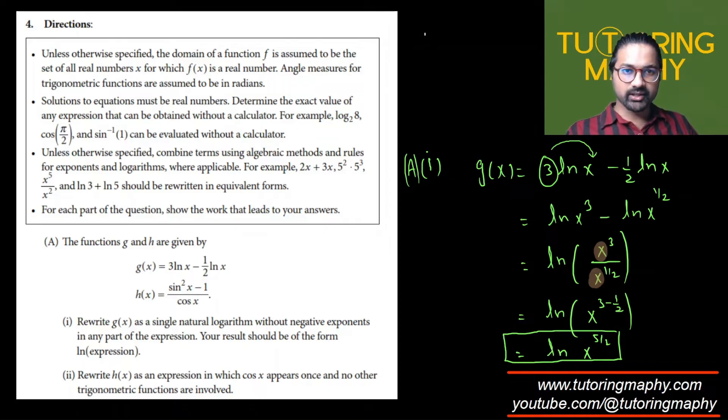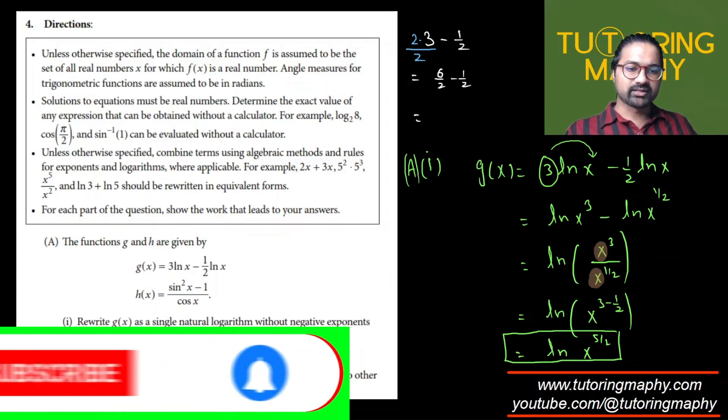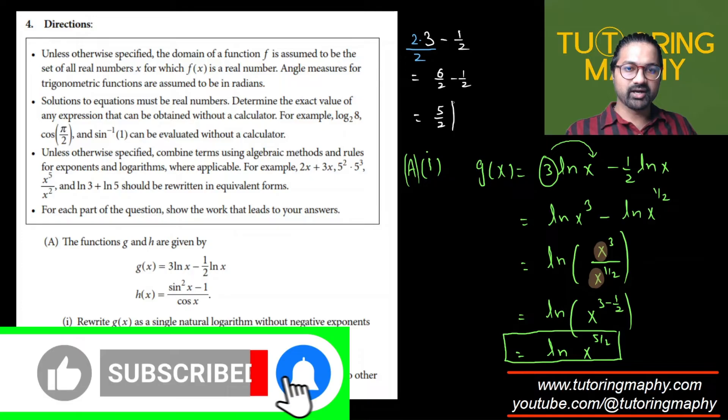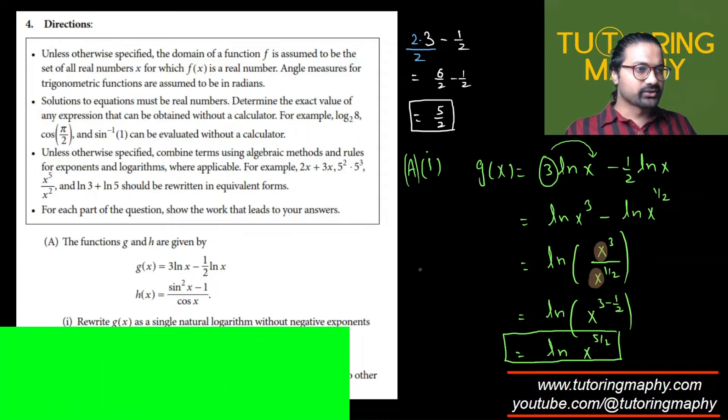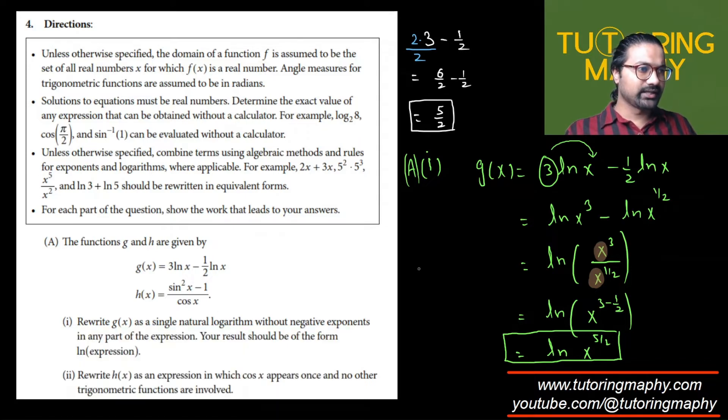We know that 3 minus one half will be 5 over 2. For 3 minus 1 over 2, you're going to make the denominators common. So I multiplied this 3 with 2 and divided by 2 as well. So the new numerator will be 6. This will be 6 over 2 minus 1 over 2. Since the denominator is common now, I can subtract 6 and 1, so that is 5 over 2. That's the final answer which we have.